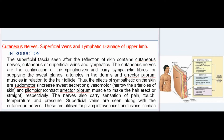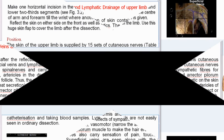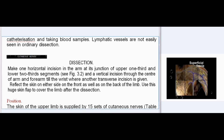The effects of sympathetic fibers on the skin are: sudomotor (increase sweat secretion), vasomotor (narrow the arterioles of skin), and pilomotor (contract erector pili muscles to make the hair erect). The nerves also carry sensation of pain, touch, temperature, and pressure. Superficial veins are seen along with cutaneous nerves, utilized for intravenous transfusions, cardiac catheterization, and taking blood samples.